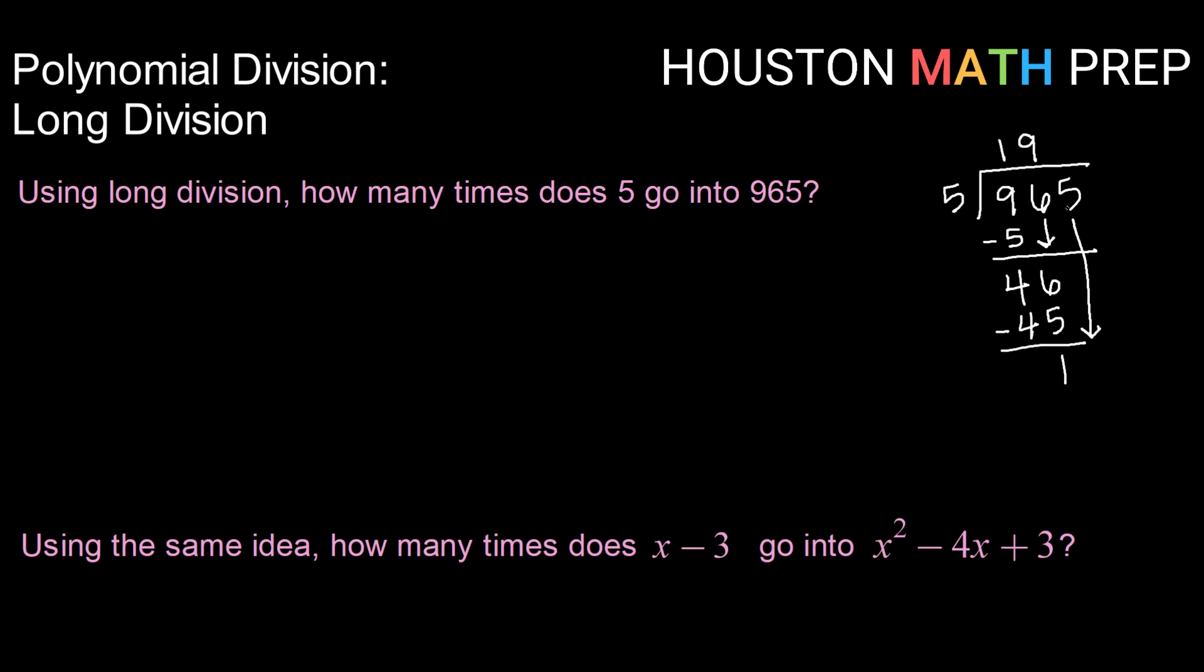And then repeat, bring down the next term. So bring down the 5. Repeat again. How many times does 5 go evenly into 15? It goes in evenly 3 times. And 3 times 5 makes 15. Subtracting here, 15 minus 15 is 0. So that means we can write 965 as 5 times 193. Or we can say that 5 goes into 965 193 times.